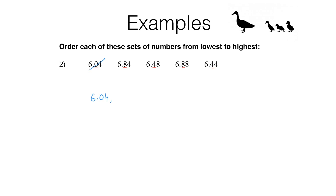Looking at those underlined digits we see that we have got an 8, a 4, an 8 and a 4. So we're going to be looking at the ones with the 4s because those are smaller than the 8s, but which one of these is the smaller number? Because they both have a 4 in that place value column we then have to look at the next place value column along. Looking at that hundredths place value column we can see that 6.44 is the smaller number than 6.48, so that makes 6.44 the next one followed by 6.48.